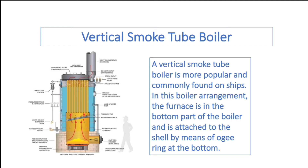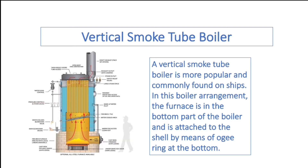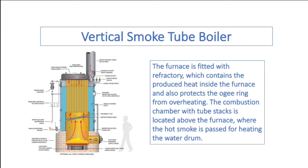The vertical smoke tube boiler is more popular and commonly found on board ships. In this boiler arrangement, the furnace is in the bottom part of the boiler and is attached to the shell by means of the AG ring at the bottom. The furnace of the vertical fire tube boiler is fitted with refractory, which contains the produced heat inside the furnace and also protects the AG ring from overheating.